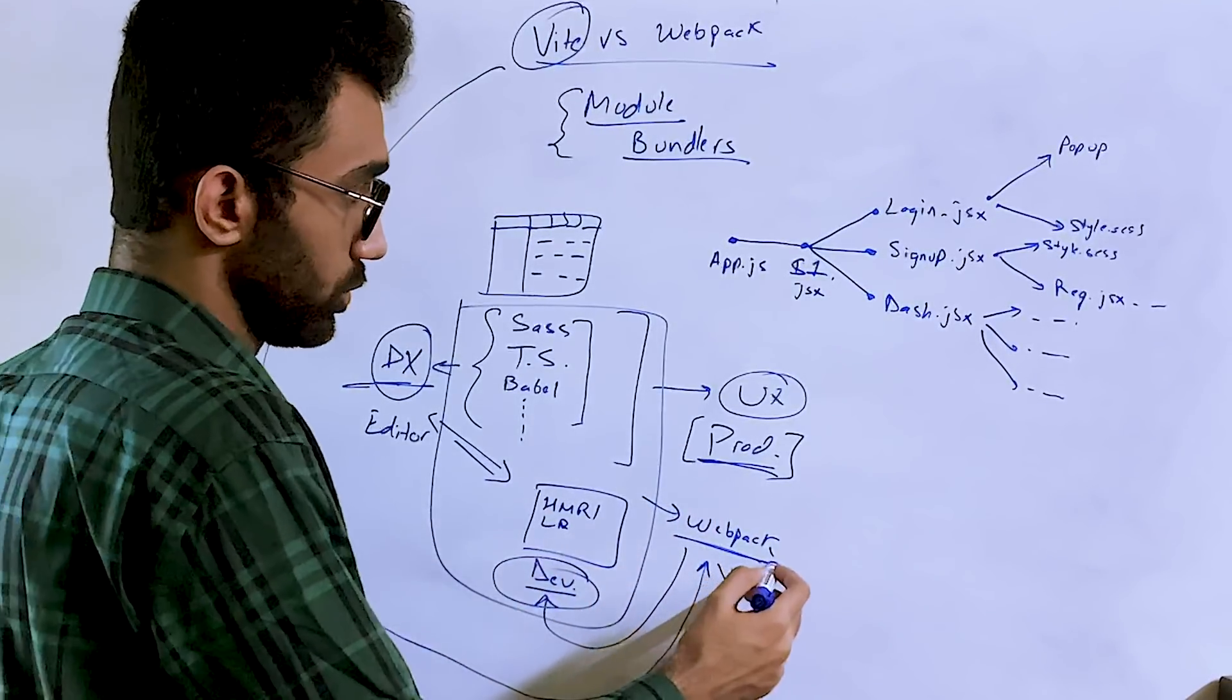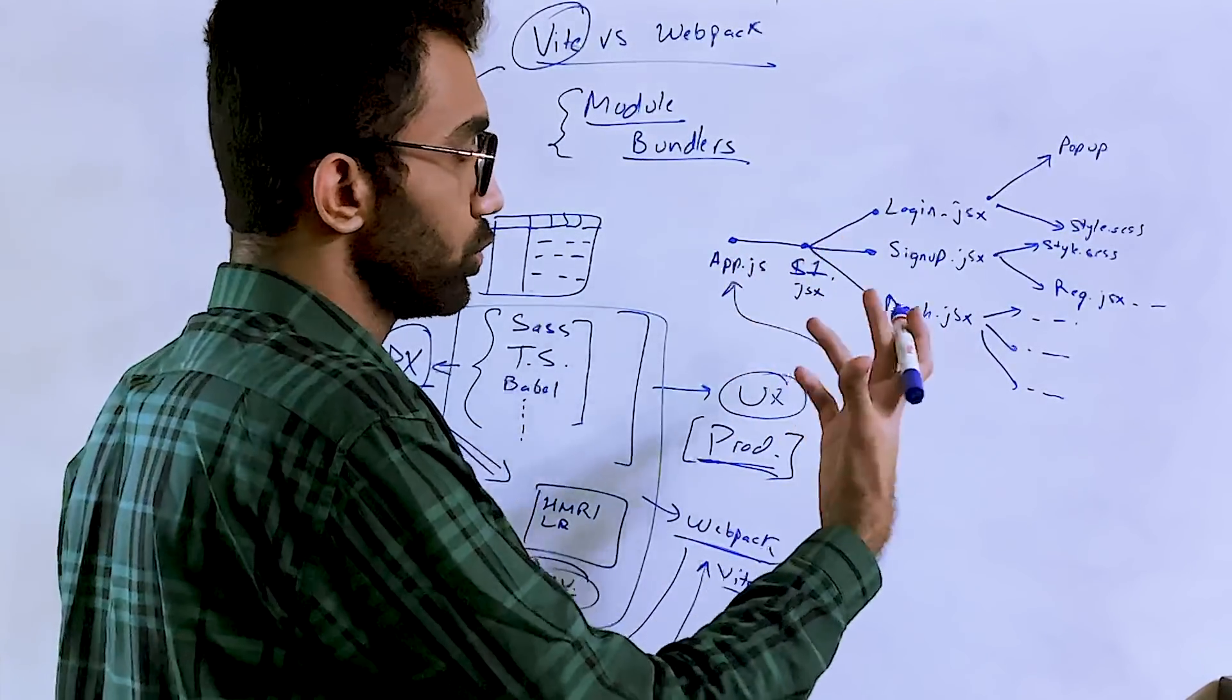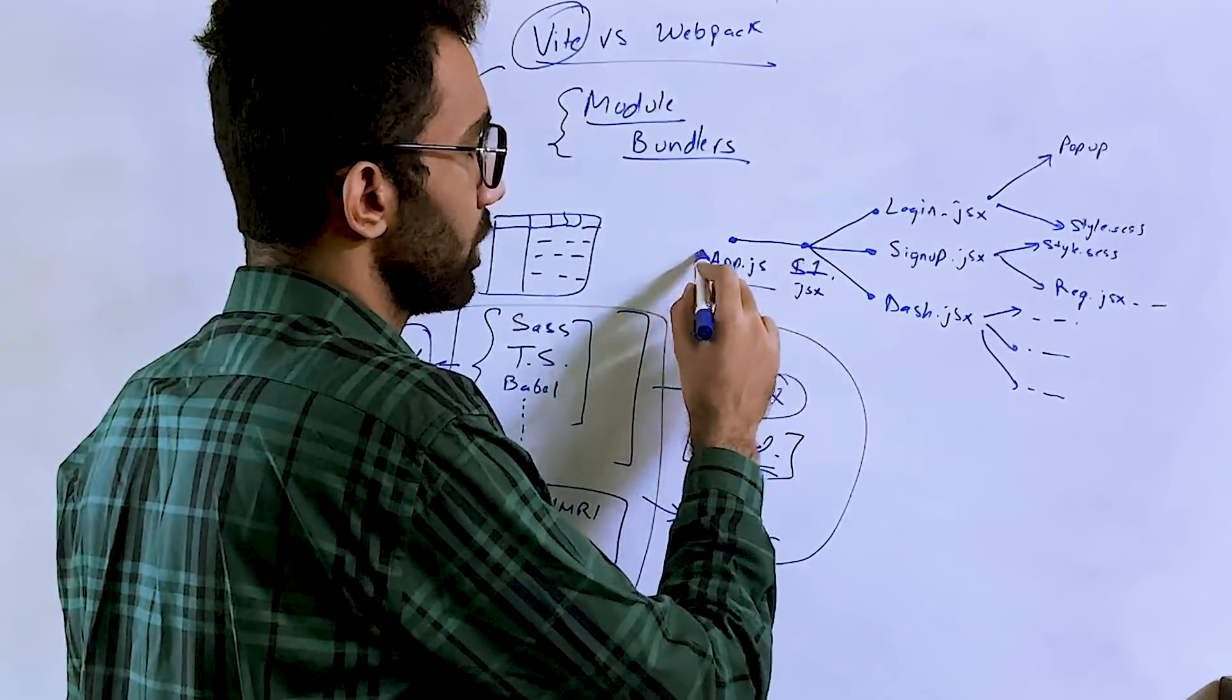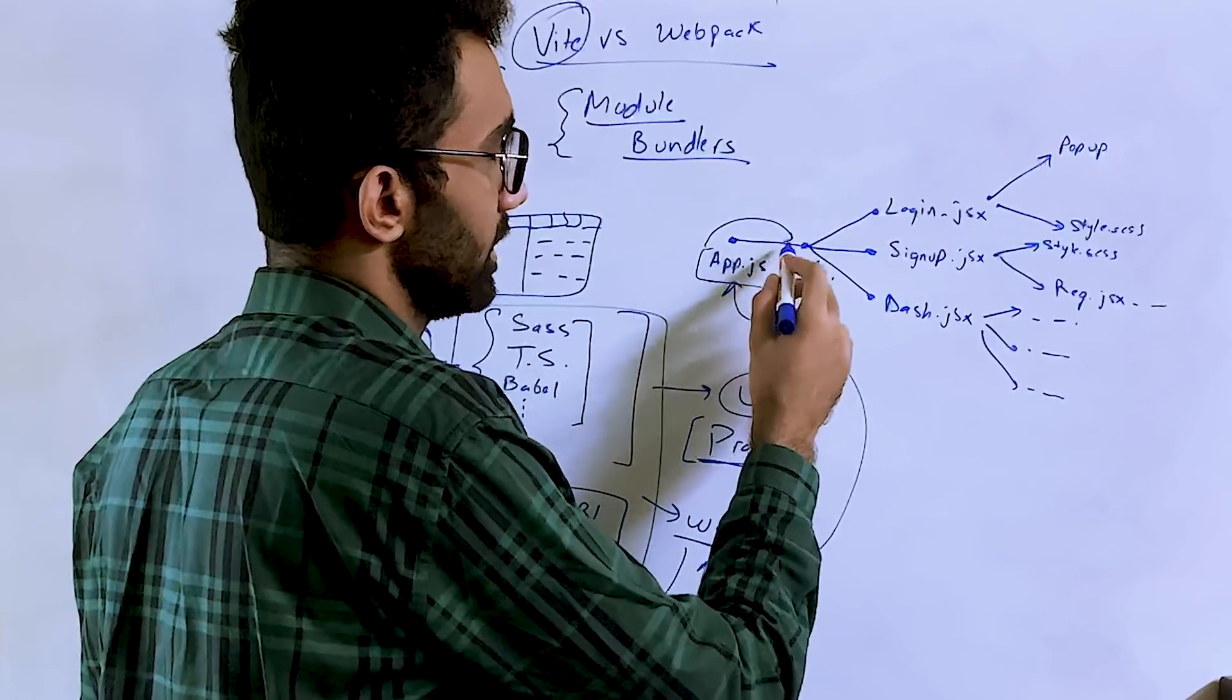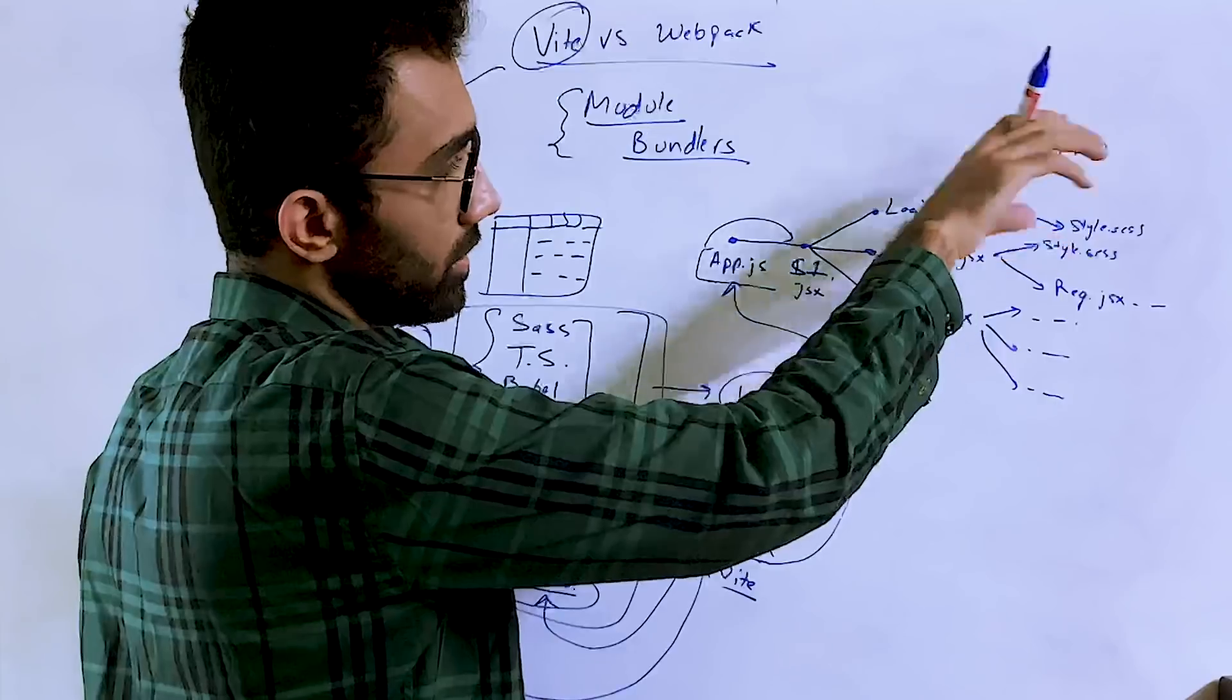Webpack would actually start transpiling and start converting this code even for the development server. For the development server, webpack would say, okay, I need to transpile this, I need to convert this, I need to do something with this. It'll start with this code, it will see it requires S1, S1 needs all these assets, so it's gonna go into those and compile them down. It's gonna go further and compile everything down. That's how webpack works.